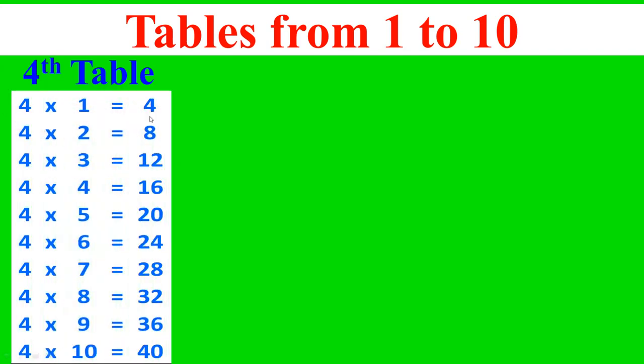Fourth table: 4 times 1 equals 4, 4 times 2 equals 8, 4 times 3 equals 12, 4 times 4 equals 16, 4 times 5 equals 20, 4 times 6 equals 24, 4 times 7 equals 28, 4 times 8 equals 32, 4 times 9 equals 36, 4 times 10 equals 40.